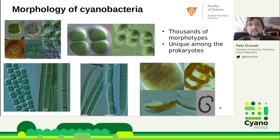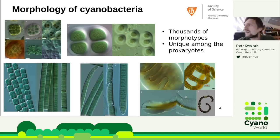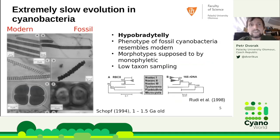Jumping back to morphology, it is kind of unique among prokaryotes that we see so many morphotypes — so many shapes and colors. We see three basic morphologies: unicellular cyanobacteria, either solitary or packed into colonies; filamentous cyanobacteria forming chains of cells; and the most advanced cyanobacteria with cell differentiation into heterocytes and akinetes. We will return to this distinction between filamentous and unicellular forms a lot. One more key thing: cyanobacterial evolution was supposed to be very, very slow — this is called hypobradytely.